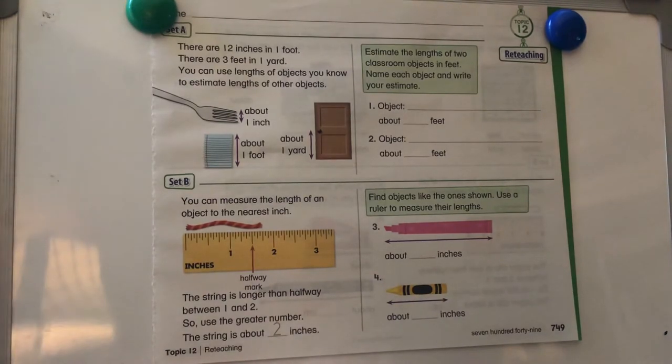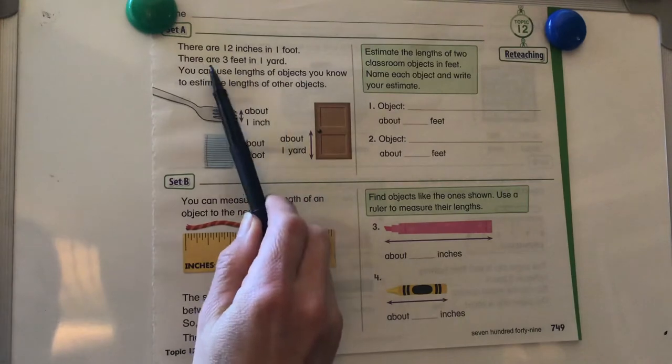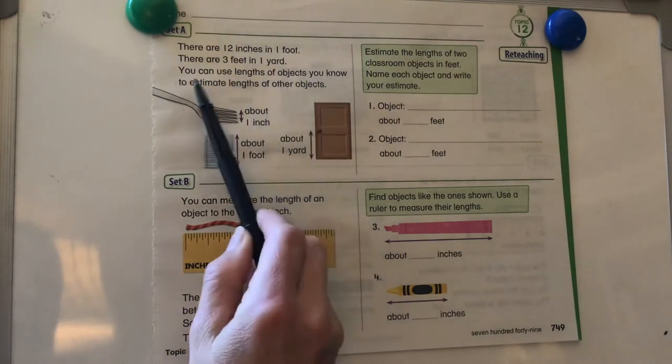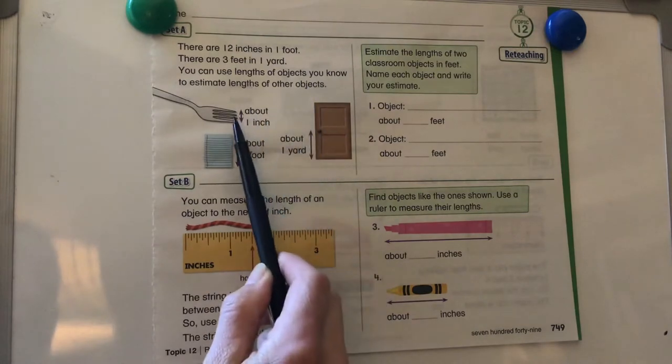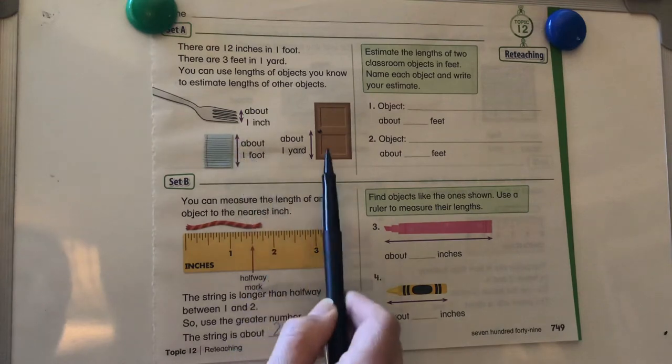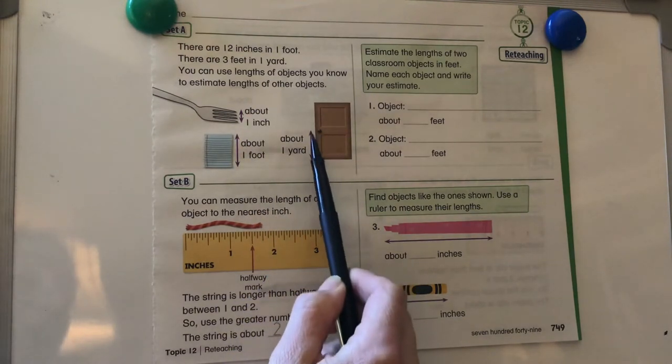We're going to be reviewing all the measuring we've been doing. There are 12 inches in a foot. There are three feet in a yard. You can use lengths of objects you know to estimate lengths of other objects. So the tines on the fork is about an inch, a piece of paper is about a foot tall, about half a foot, half a door is about a yard.